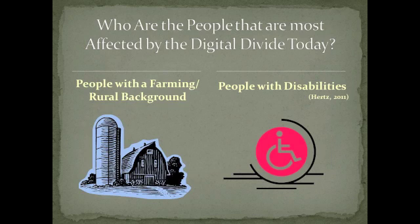The digital divide is no longer divided by just race or socioeconomic status. The two groups of people most affected by the digital divide are people who have a farming or rural background and those with disabilities. People living in a rural area who depend on farming for a living have little need for computers and internet, and coupled with limited access to internet, this heightens this group's vulnerability to fall behind the digital divide. People with disabilities are vulnerable for another reason — currently, there are no laws stating that websites need to be accessible to people with disabilities, creating a gap within the digital realm.